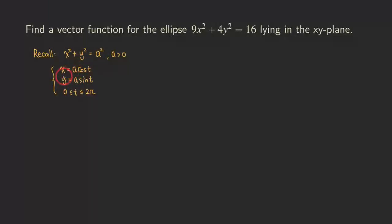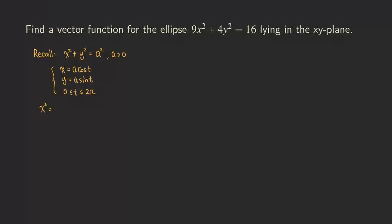We can also show why this works, because that's related to how we can parameterize the ellipse — it's basically adjusting this parameterization to fit the ellipse. We can use algebraic manipulation to eliminate the parameter t and get back to the circle equation. If we square x and square y and add them together, x squared is a squared cosine squared of t, and y squared is a squared sine squared of t.